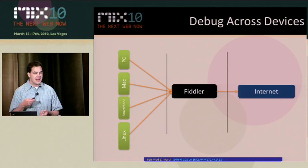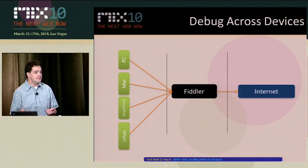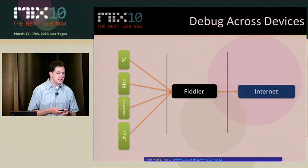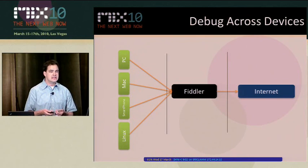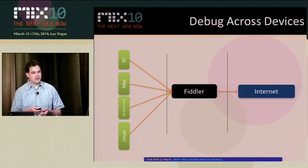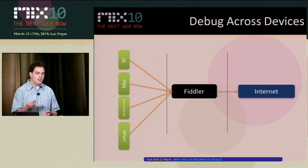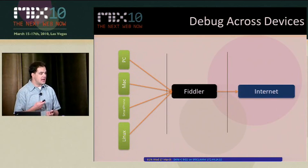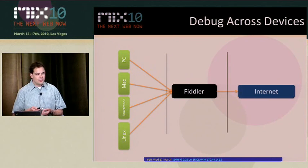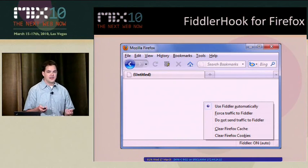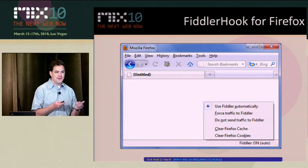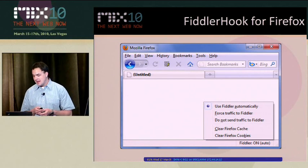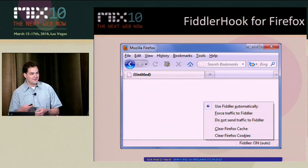All you have to do is point that device at the Fiddler endpoint — usually the machine name running it on port 8088, or any other port you select. This is also useful for debugging a Mac or Linux machine. You can't run Fiddler on those since Fiddler is a .NET application only available for Windows, but you can point those other devices and computers at Fiddler and debug your traffic. For Firefox, you can easily reconfigure your proxy settings every time you start and stop Fiddler. About five years ago, I went to the Firefox team and suggested they respect the Wininet proxy settings.